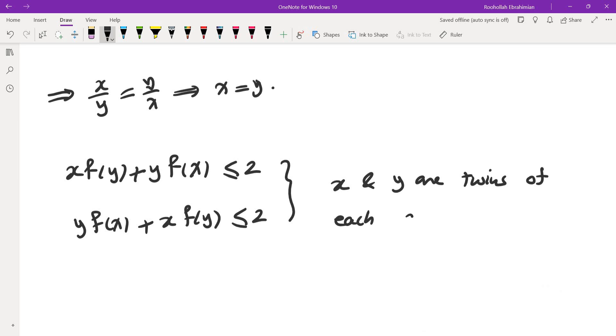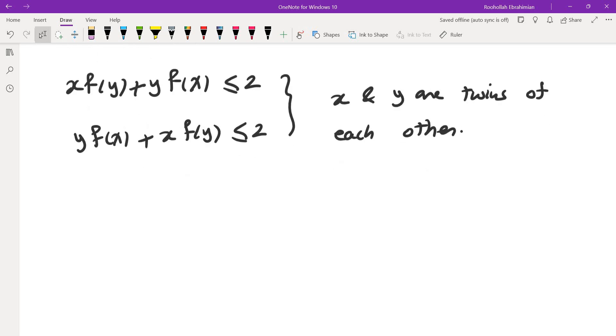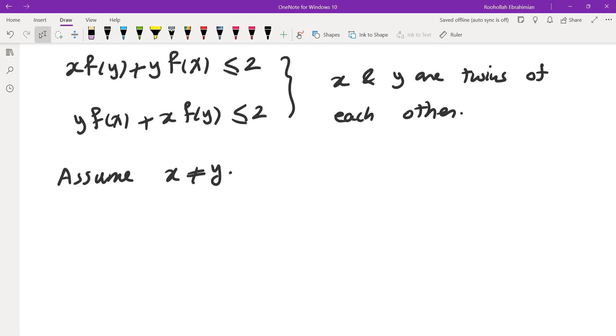So what I'm going to do is I'm going to call x is a twin of y and y is a twin of x. The first step is I would like to show that x can be only twin of itself. So the first thing was I thought, can I show that everything must be a twin of itself? Let's assume that's not the case. So assume x and y are in fact different, and let's see what happens.